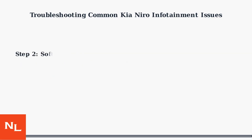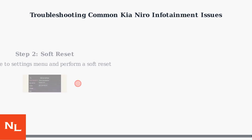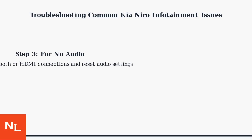If that doesn't work, navigate to the settings menu and perform a soft reset, as shown in this vehicle settings screen. For no audio issues, check Bluetooth or HDMI connections and reset audio settings to restore functionality. If these steps don't resolve the issues, proceed to the next section for more advanced fixes and solutions.